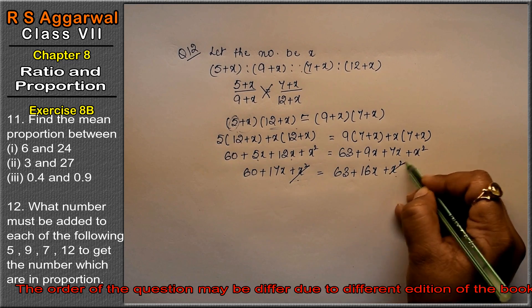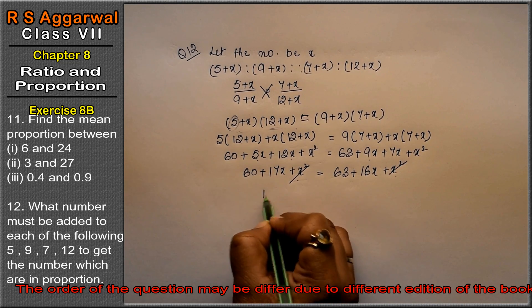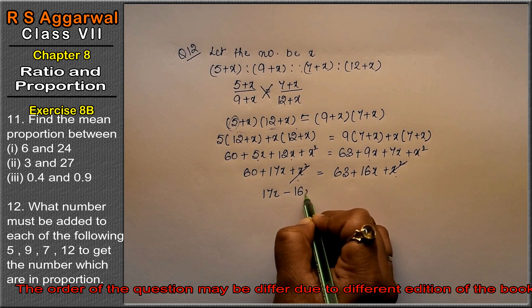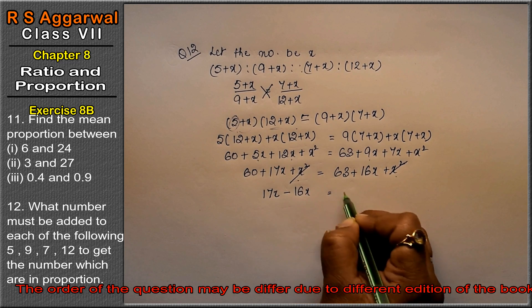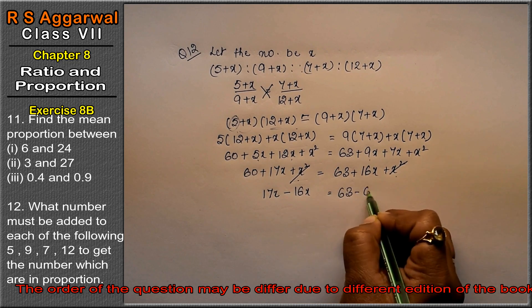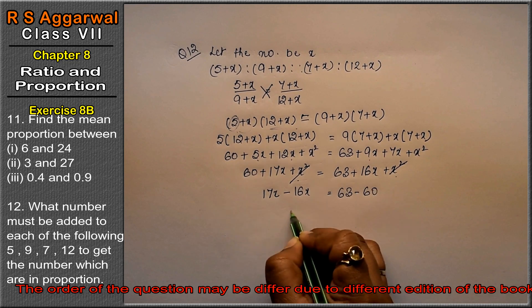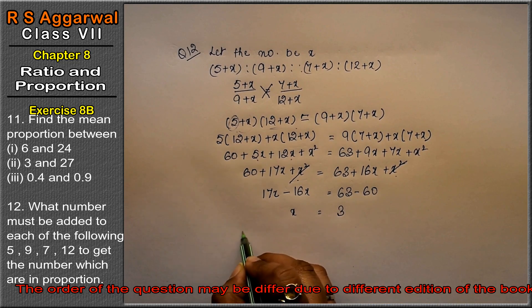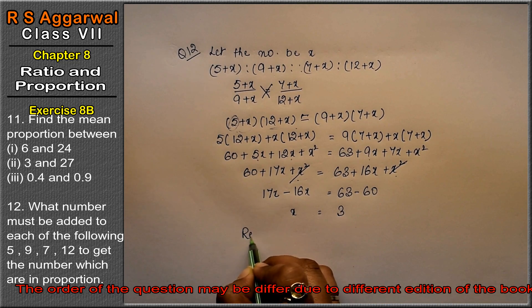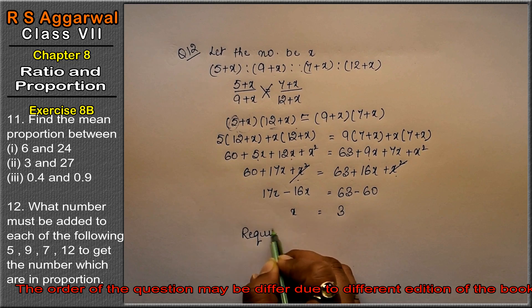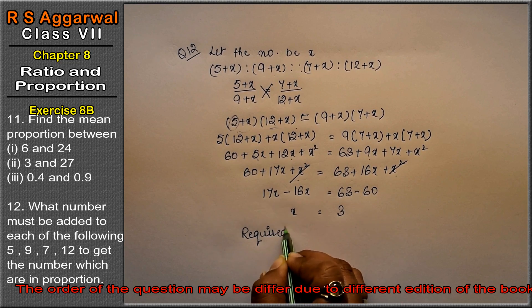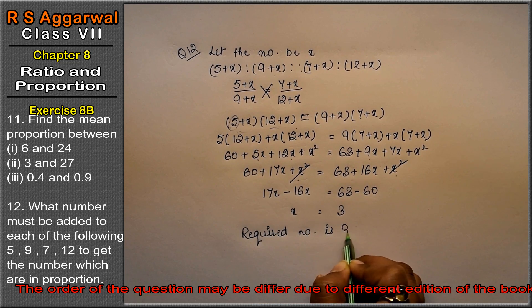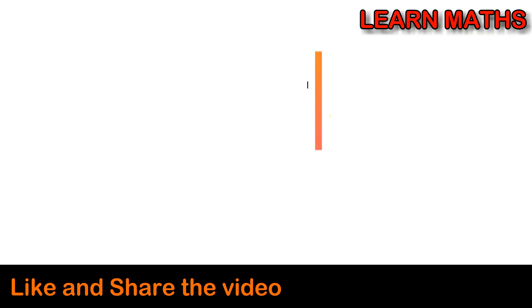Now bring x terms to one side: 17x minus 16x equals 63 minus 60. So x equals 3. Hence the required number to be added is 3.